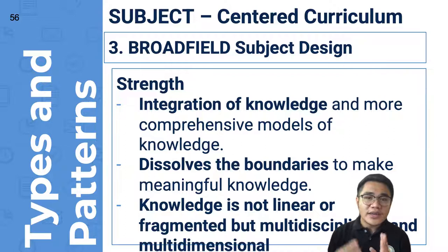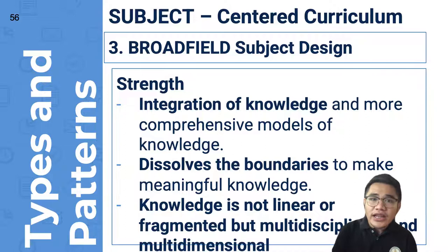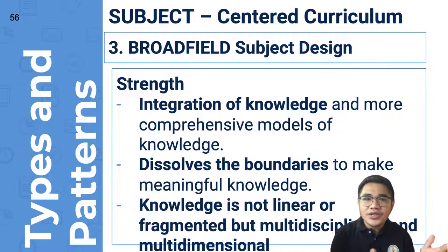To summarize: in separate subject design, subjects are compartmentalized and isolated, but the learner can specialize in a subject. In correlated design, two subjects can be integrated while maintaining their identities. For example, looking at literature during a certain historical era is a historical approach to literature or a literary approach to history — it's up to the teacher which approach to use.